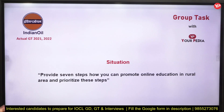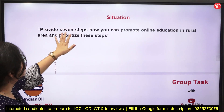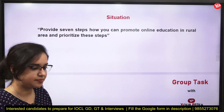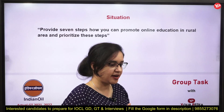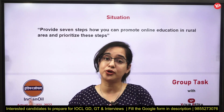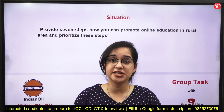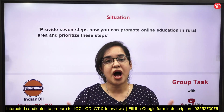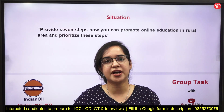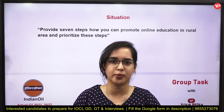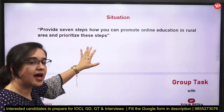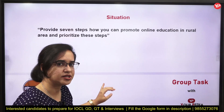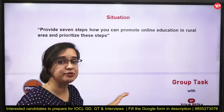I'm going to give you a list of topics. For example: provide seven steps on how you can promote online education in rural areas and prioritize those steps. In a group task, when given a situational task, each participant proposes different ideas, and whatever time is given, you make notes and think about what ideas and technology you can use and how teams can be formulated.